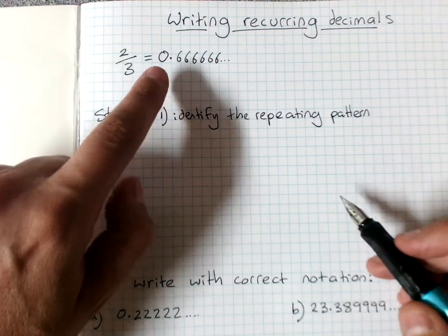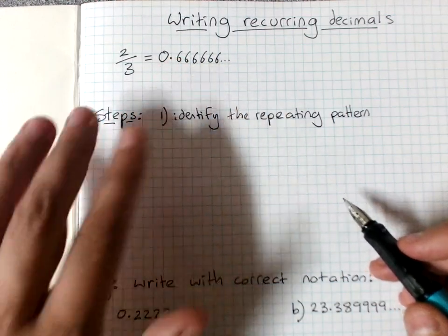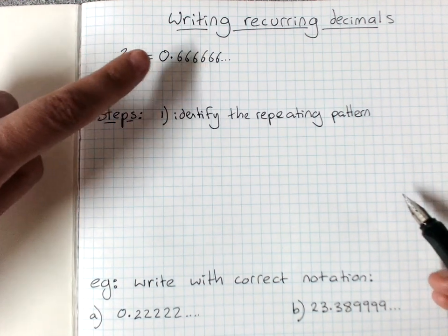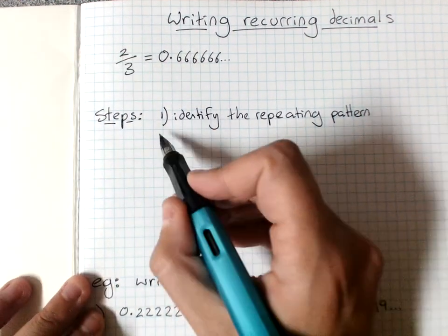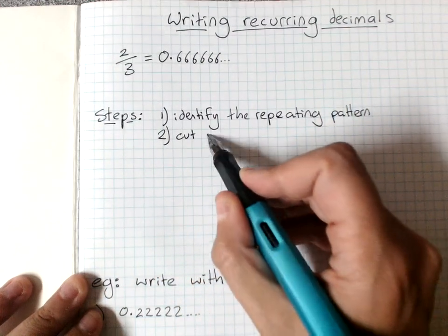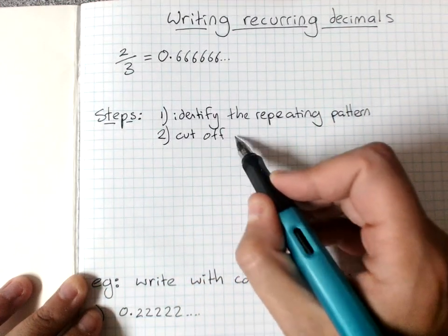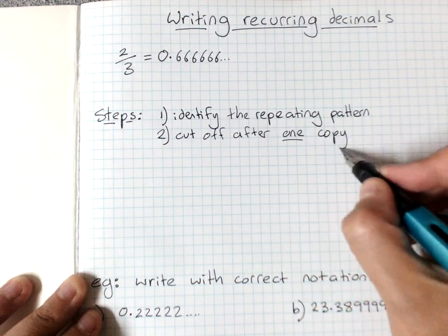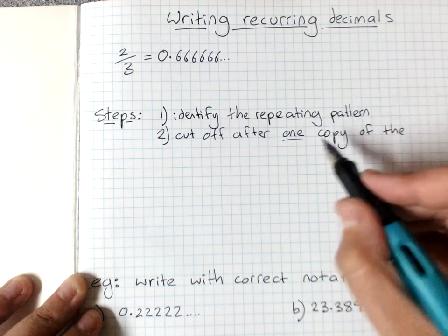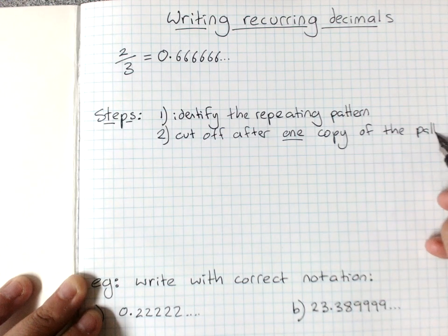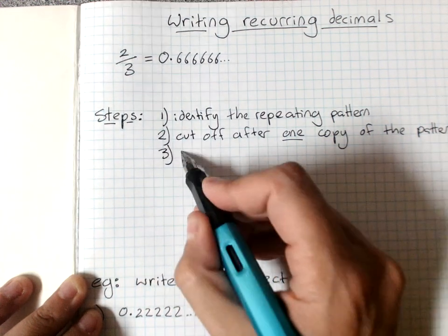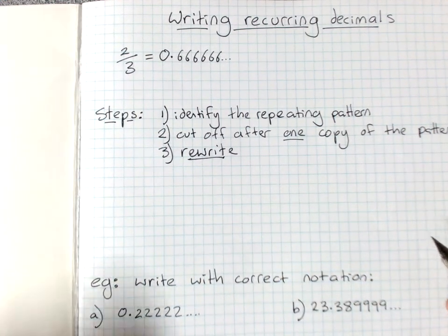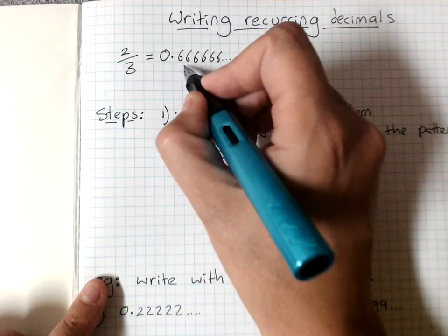So here the repeating pattern is a 6. Now it's not two 6s or three 6s, we go for the smallest bit that's just one copy of the repeating pattern. So that's a 6 and we just put in 6s one after the other. You cut off your decimal and you're going to rewrite it after one copy of the repeating pattern. And then your third step is rewrite that cut off bit. You must do that.